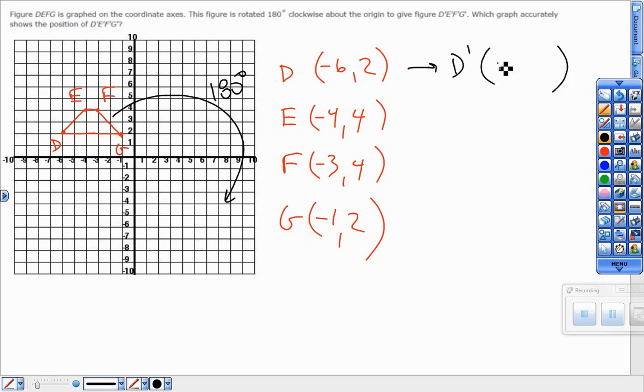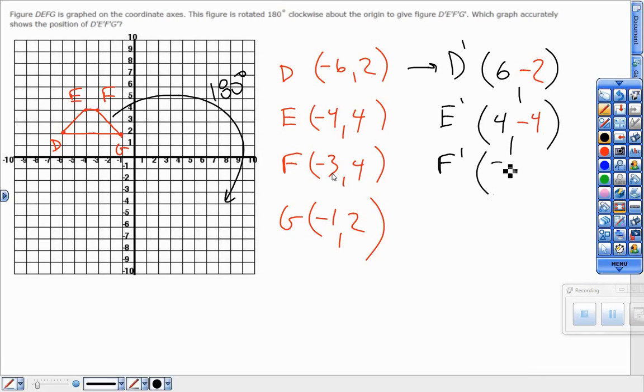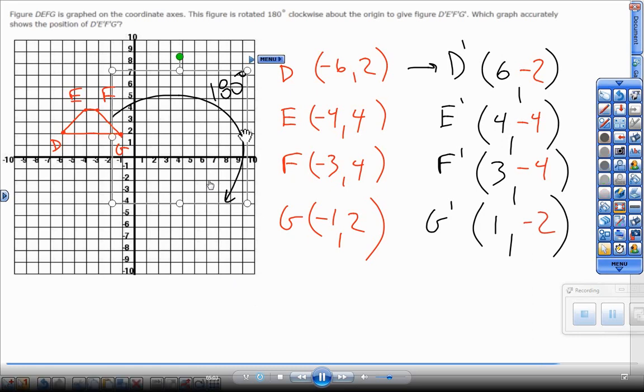So to get my new D prime, again don't flip, don't switch the position, don't change the 2 and the negative 6. Don't do this, don't change, don't switch them—nope, nope, nope. Don't want to do that. Leave the points alone but make them opposite. So the opposite of negative 6 is positive 6, opposite of 2 is negative 2, opposite of negative 4 is 4, opposite of 4 is negative 4, opposite of negative 3 is 3, opposite of negative 1 is 1, opposite of 2 is negative 2. So notice the points didn't flip around, they just opposite.